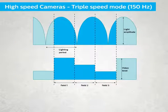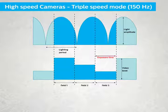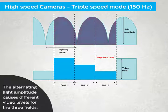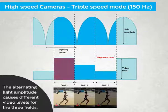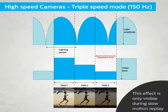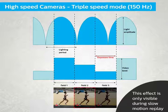In triple-speed mode, the exposure time is one-third of the exposure time in single-speed mode. The alternating light amplitude causes different video levels for the three fields. This effect is only visible during slow-motion replay and is even more visible with very high-speed cameras.